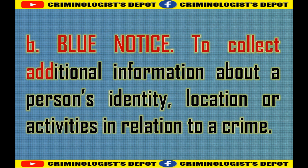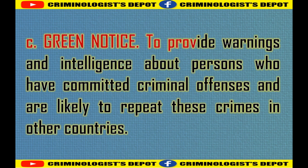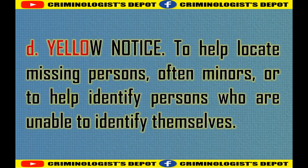B. Blue notice: to collect additional information about a person's identity, location, or activities in relation to a crime. C. Green notice: to provide warnings and intelligence about persons who have committed criminal offenses and are likely to repeat these crimes in other countries. D. Yellow notice: to help locate missing persons, often minors, or to help identify persons who are unable to identify themselves.